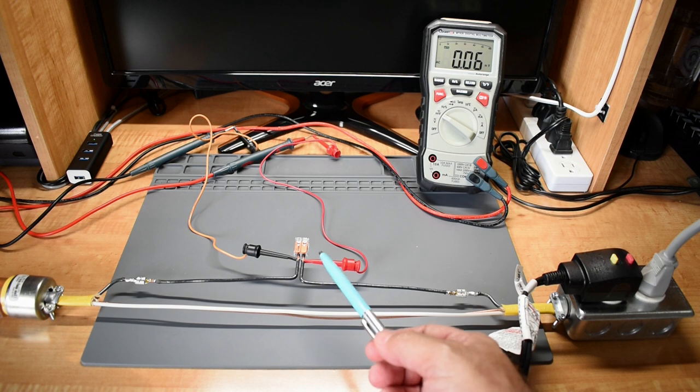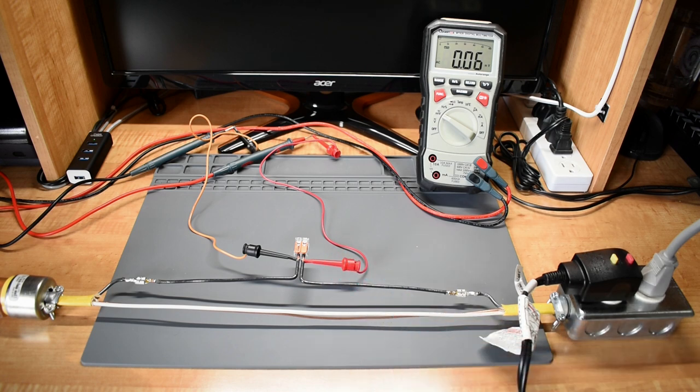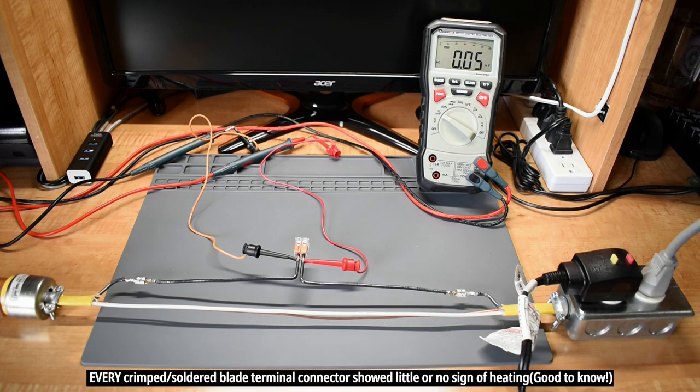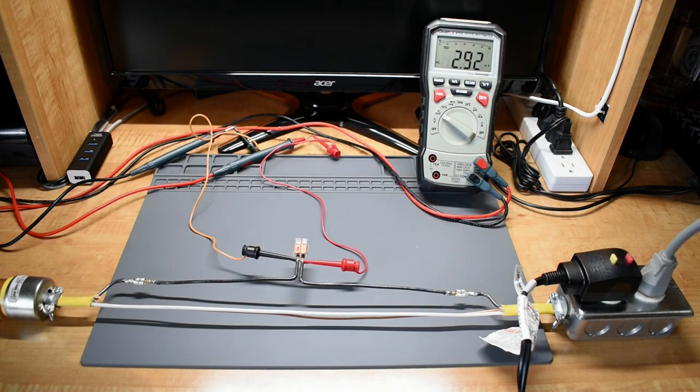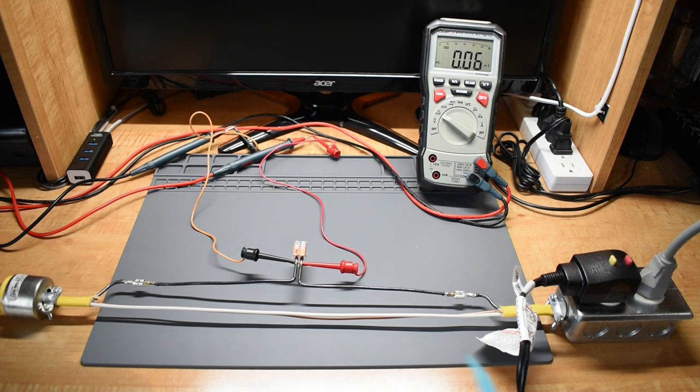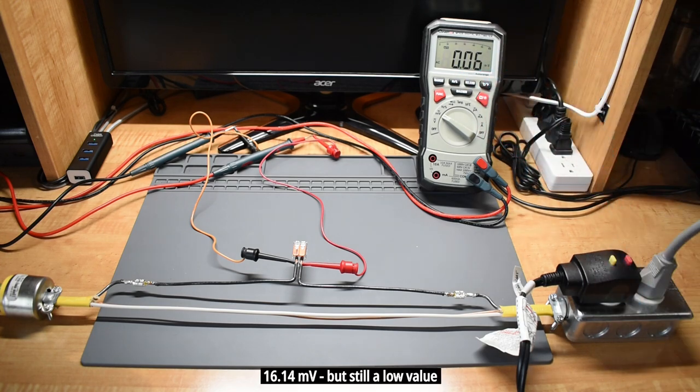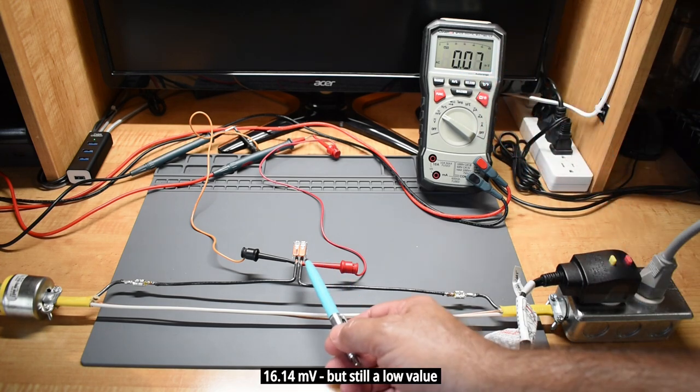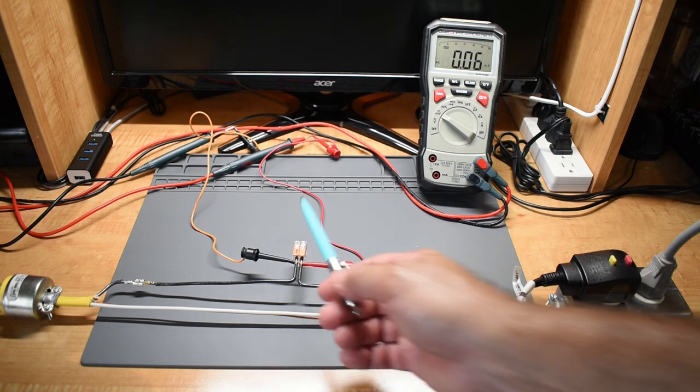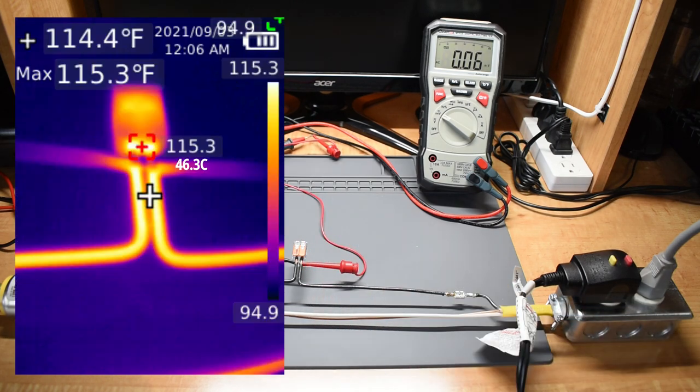The last connector is the one that wiggled the most, the Wago 221. As you just saw, the Wago 221 had the highest voltage drop out of all of them, and I expected that because the wires wiggled the most within the connector. Right here you can see a temperature reading of this connector at the end of the test.